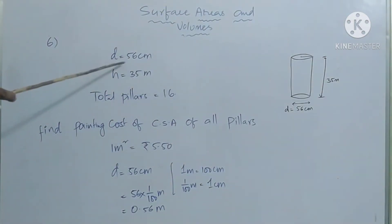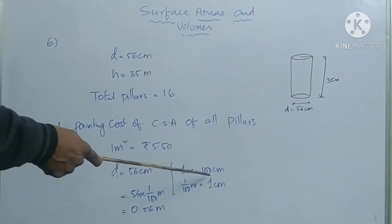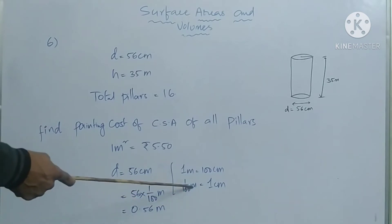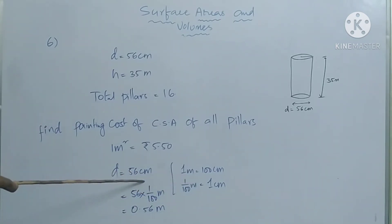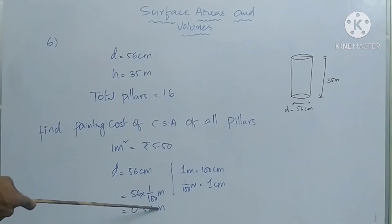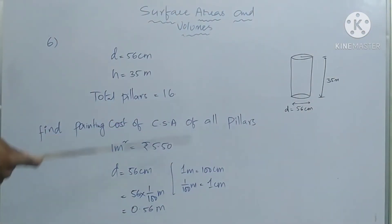The diameter is in centimeters and height is in meters. Painting cost is also given in meters, so first change the diameter into meters. Diameter is 56 centimeters. One meter equals 100 centimeters, so one centimeter equals one by hundred meters. Substituting: 56 into one by hundred equals 0.56 meters. So the diameter of the pillar is 0.56 meters.